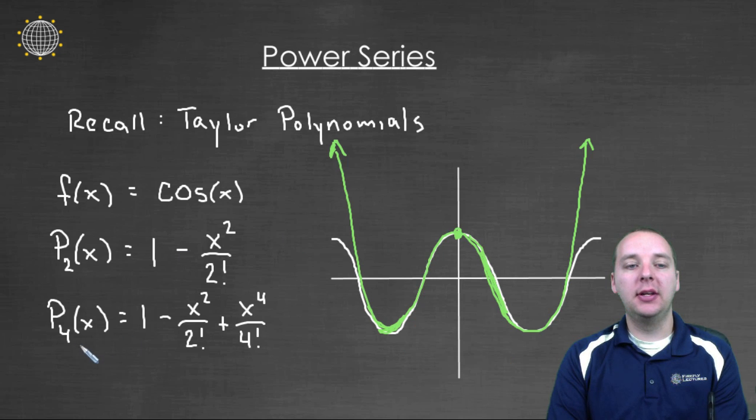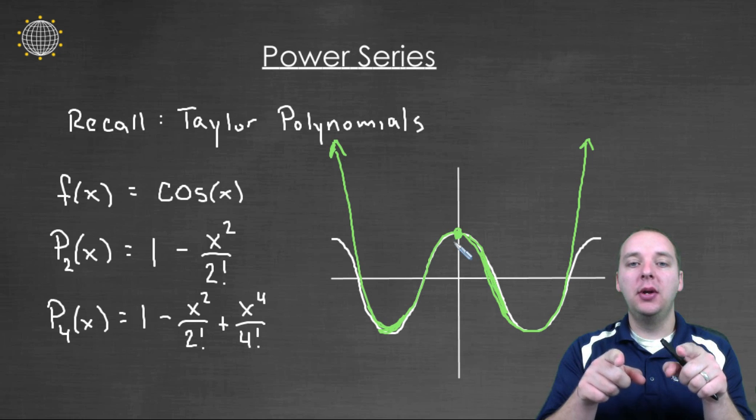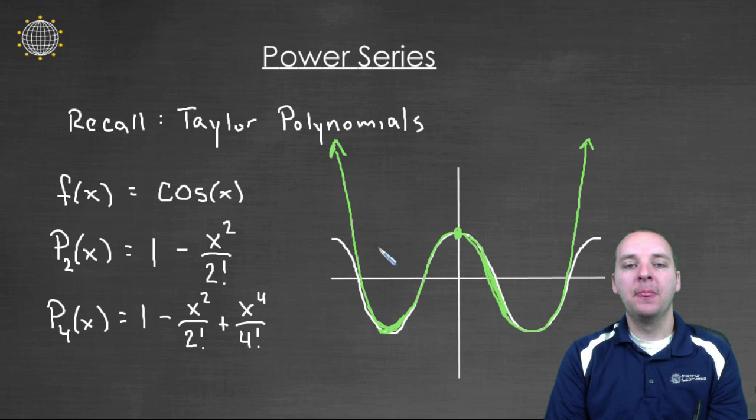So for example, if you looked at a degree 4 Taylor polynomial, it would not only bend downwards at 0 and be a good approximation around 0, but it would also bend back upwards as well. And that's more accurate than our quadratic. Well, we could ask a very natural question then.